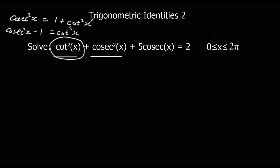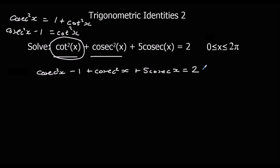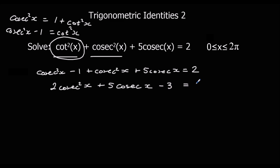We substitute cosec²x − 1 in for cot²x, giving us cosec²x − 1 + cosec²x + 5 cosec x = 2. Collecting like terms and taking 2 away from both sides: 2 cosec²x + 5 cosec x − 3 = 0.